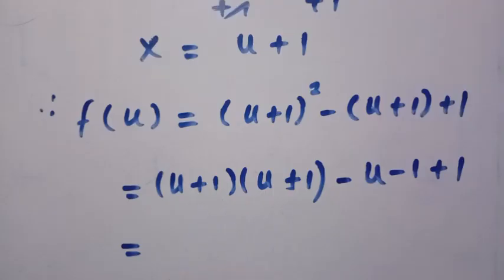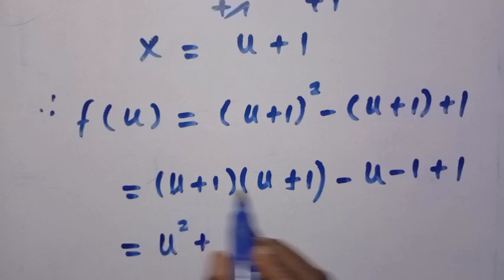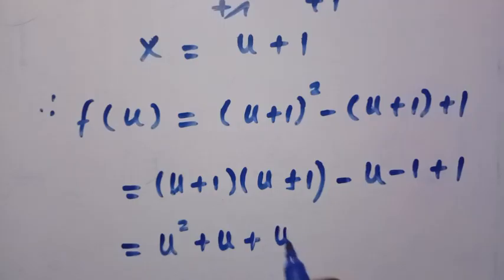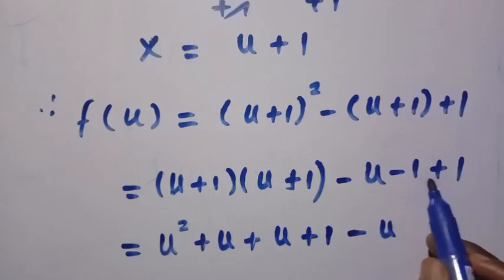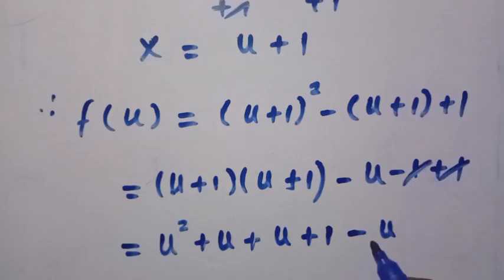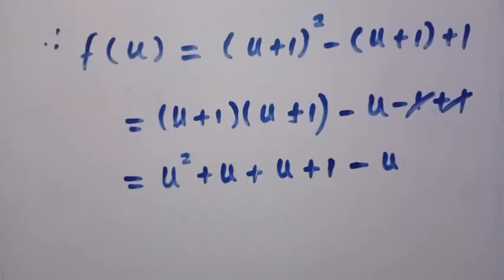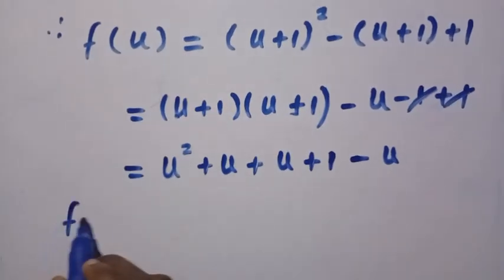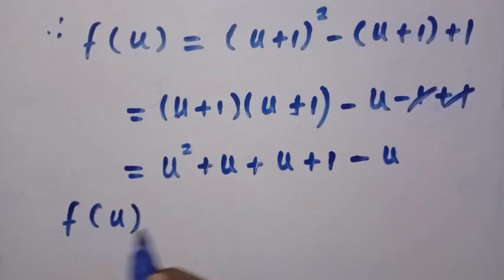By multiplying this, what we are going to have is u times u, that is u squared plus u times 1, we have it as u plus 1 times u, that is u plus 1 times 1, that is 1. Then we have this as minus u, and so it becomes this cancelled, and we have this cancelled, and we have only minus u.